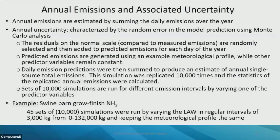Our models were developed to estimate daily emissions. To obtain an annual emission, you apply the model for each day of the year and sum the results. We also wanted to characterize the uncertainty associated with that annual emission. This was done by characterizing the random error in model prediction using a Monte Carlo analysis — taking the residuals on the back-transformed normal scale, the difference compared to measured emissions, and randomly selecting those residuals and adding them to predicted emissions for each day of the year.